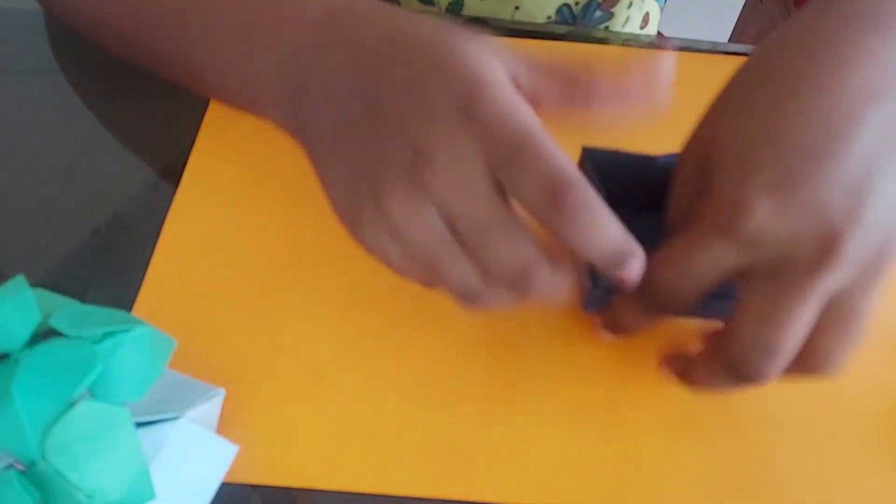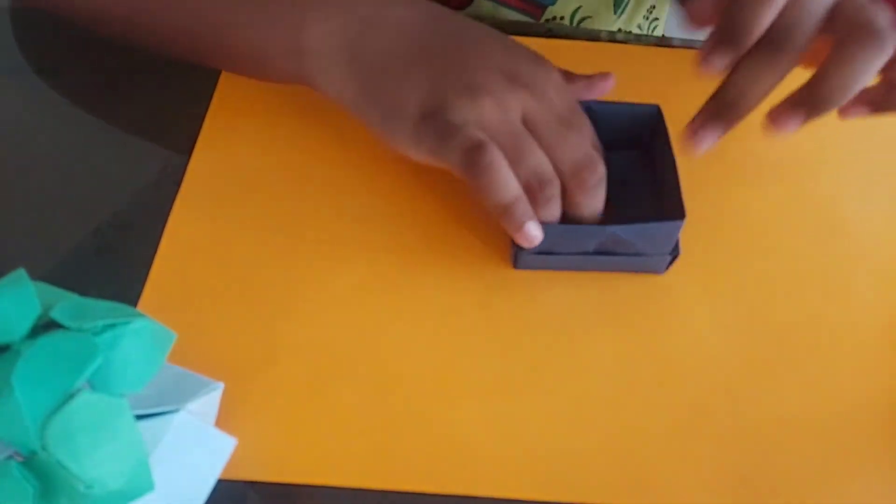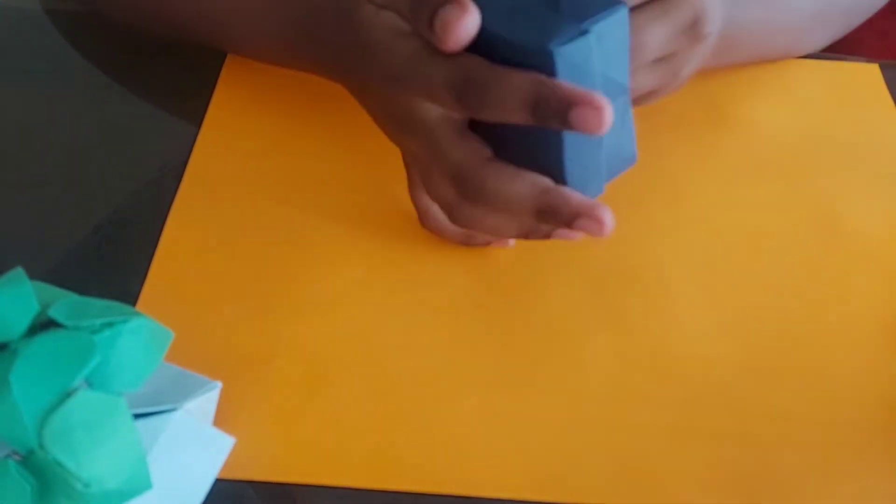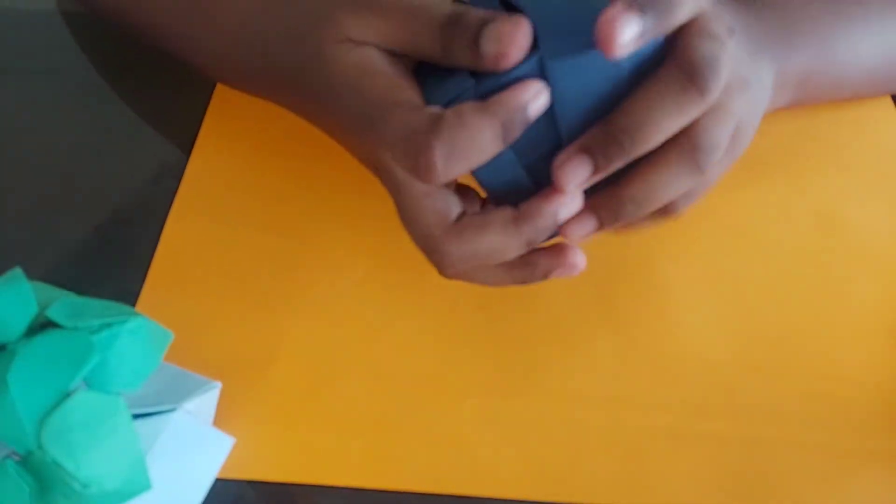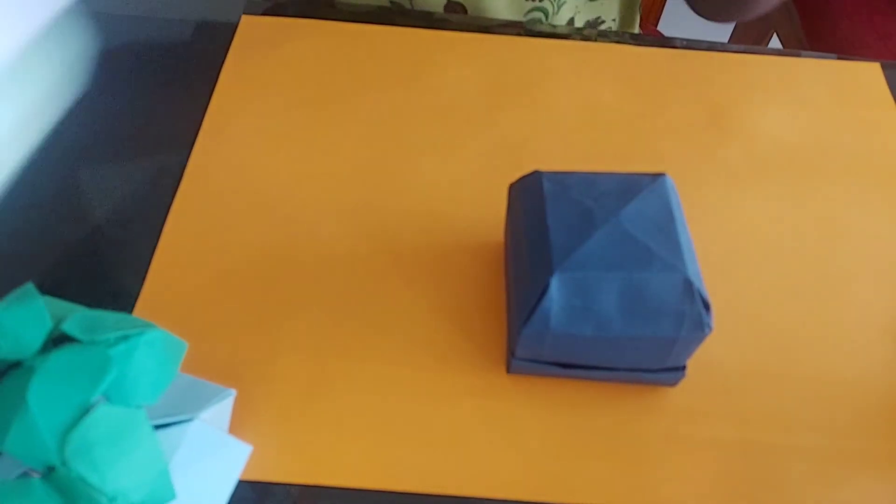Now set this box below the Masu box and then close the lid. Now we have two jewelry boxes ready.